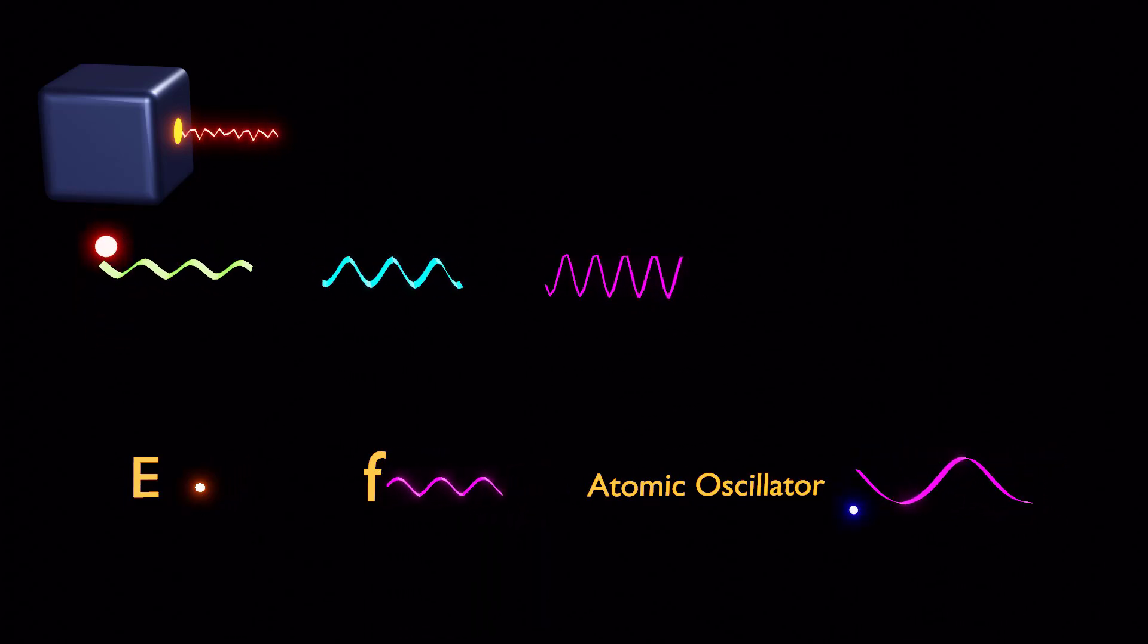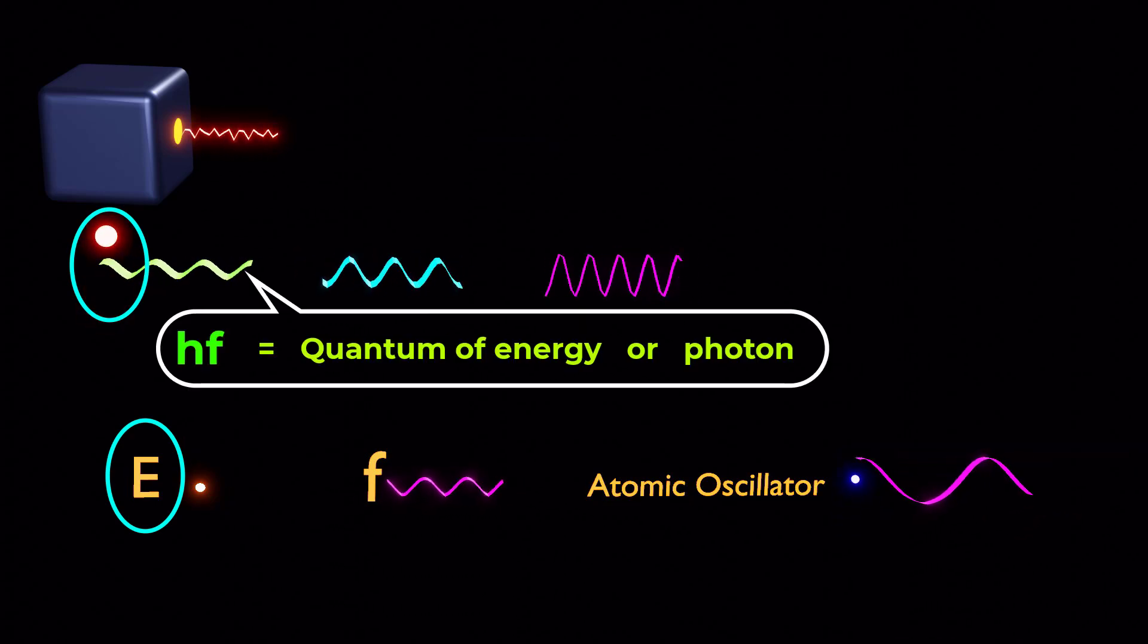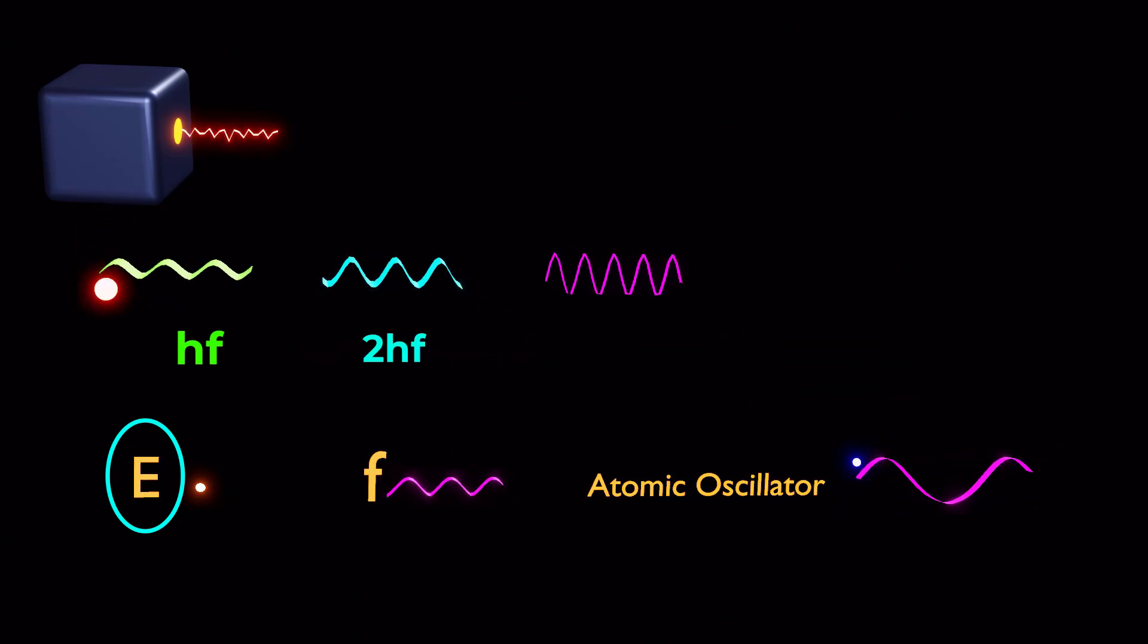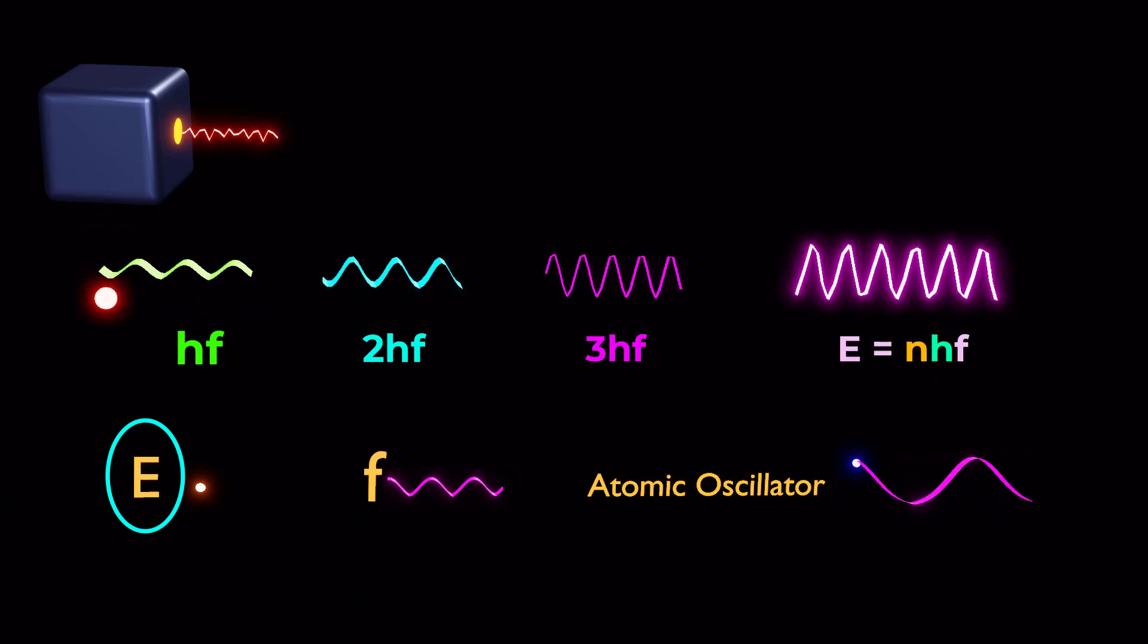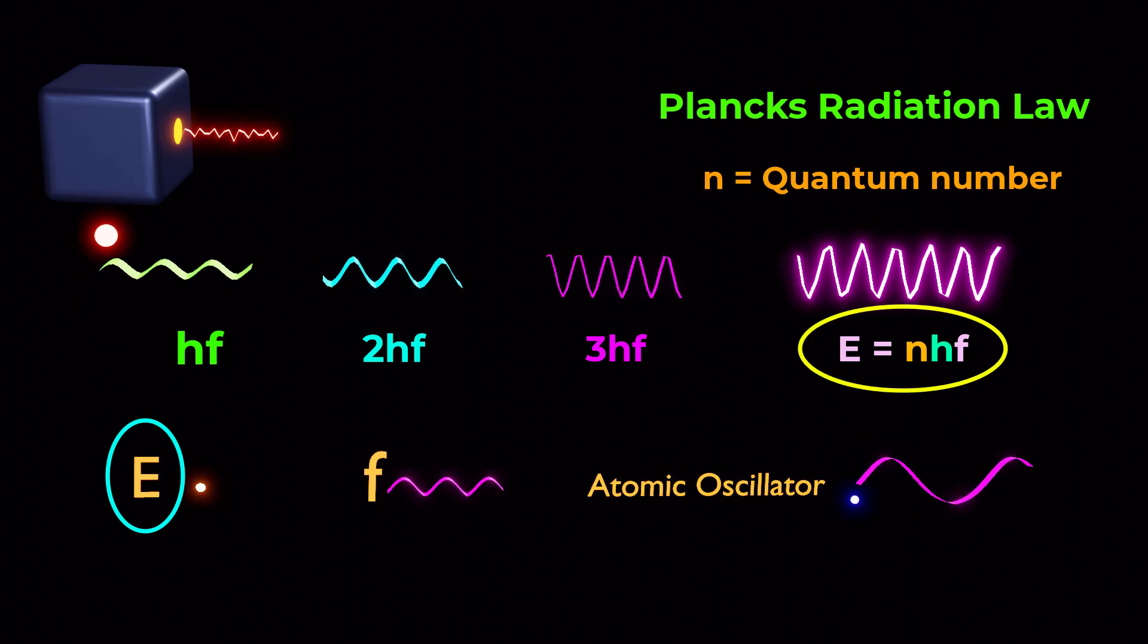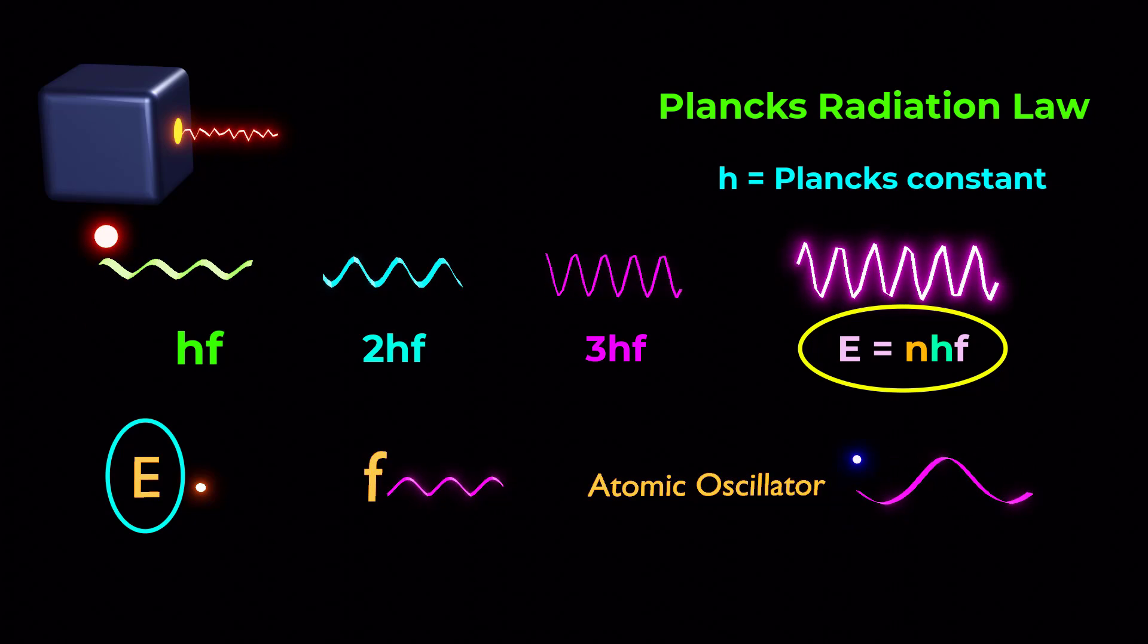The minimum possible value of energy an oscillator can have is hf. This value is called quantum of energy or photon. The higher values of energy are 2hf, 3hf or integral multiple of hf, where n is called quantum number and represents the state of an oscillator, while h is Planck's constant.